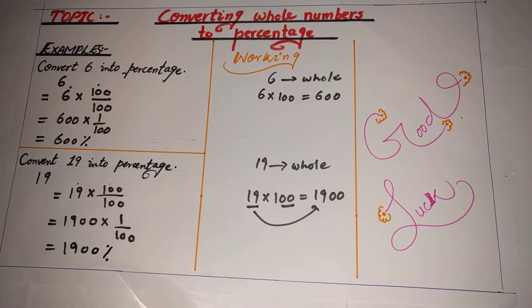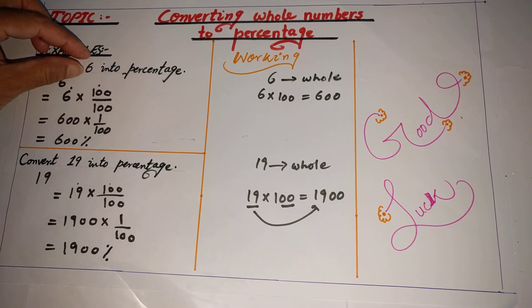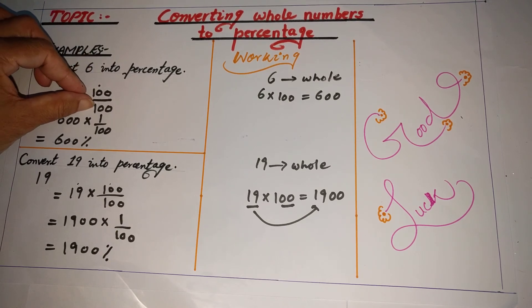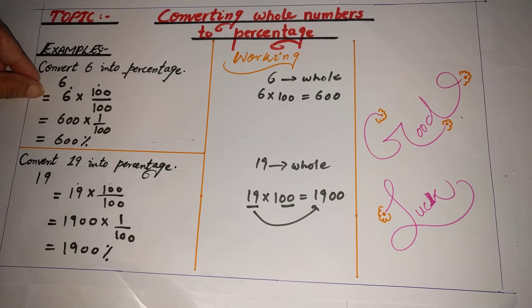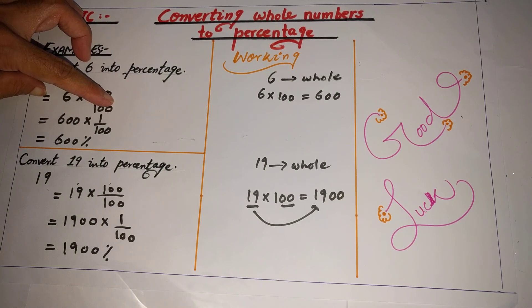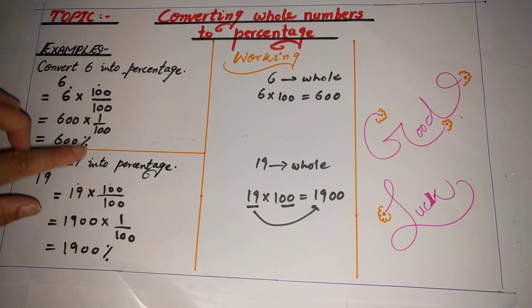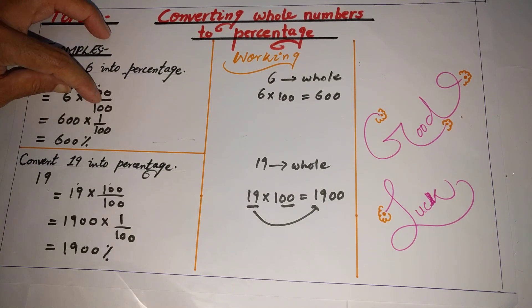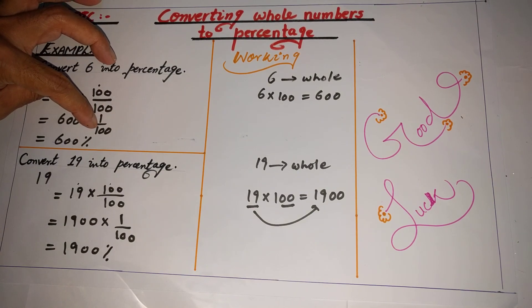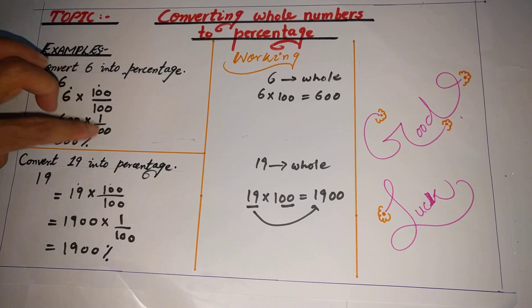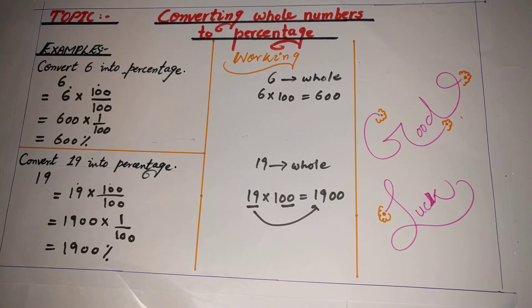Very easy and very simple. You just have to multiply the given whole number by 100 and also divide it by 100 because of the equal sign — if you multiply something, you also divide by that same number. This gives you 100 as the denominator, and the numerator multiplied by 100 becomes the number, while the denominator 100 is converted into the percentage sign. I hope you have learned this concept and your understanding is clear on how to convert a whole number into percentage.